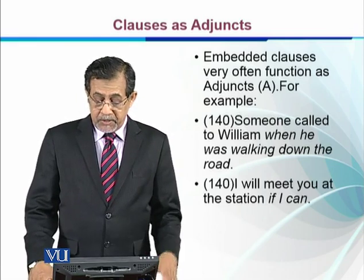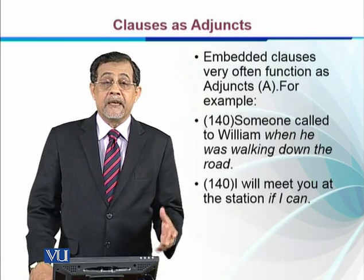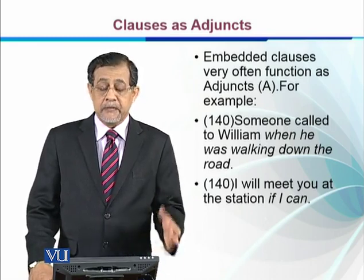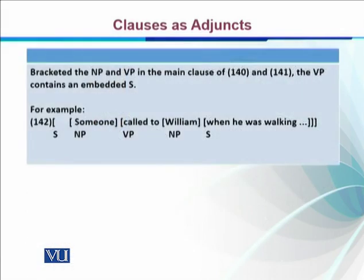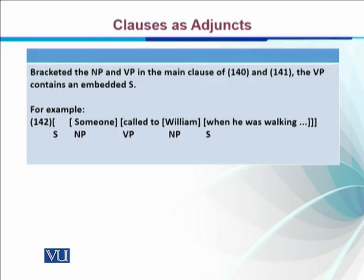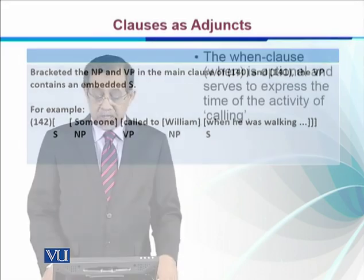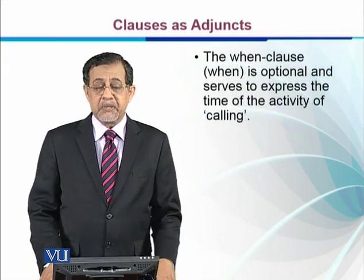Another example: 'I'll meet you at the station if I can.' So 'if I can' is a conditional clause which is an adjunct clause. If we bracket the first sentence, we find that 'someone called to William' — subject — is a noun phrase, 'called to William' is a verb phrase, 'William' is a noun phrase, and 'when he was walking' is an S-bar sentence — an adjunct sentence.